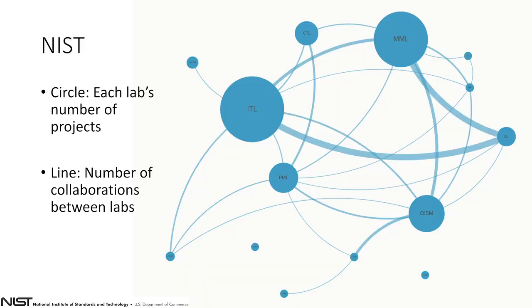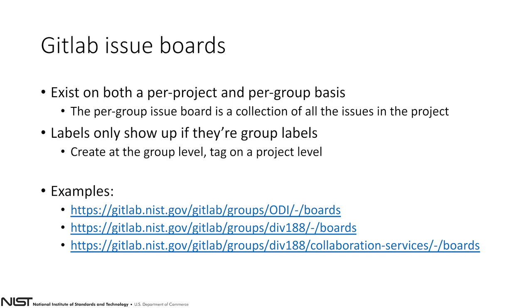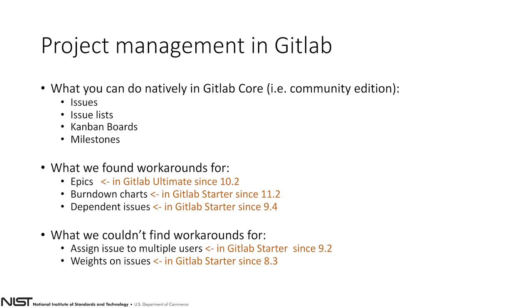This is kind of what it's turned into — we now have all these different groups at NIST and this is kind of how they're collaborating. The size of the bubble is basically how many projects they have in GitLab, and the strength of the arrow is basically how many people are collaborating from one project to another within those labs. ITL — Information Technology Laboratory — CTL — Communications Technology Laboratory. So this is just my advice for what you can do: the Div188 board is that Kanban board that exists at the group level, and the Collaboration Services board is at the subgroup level.